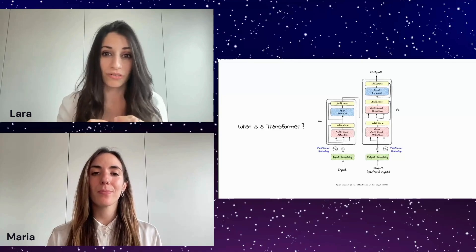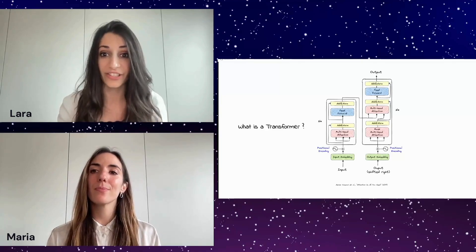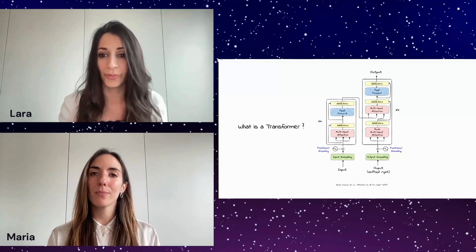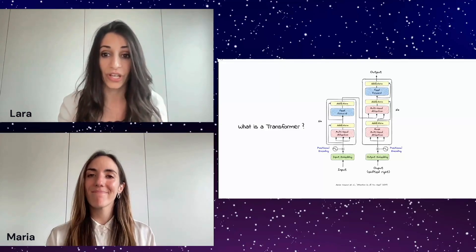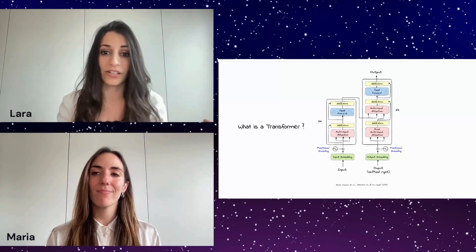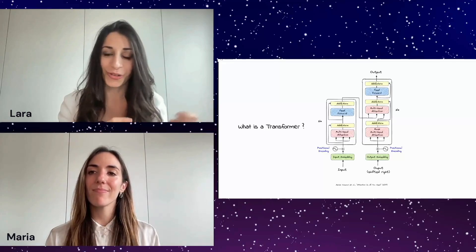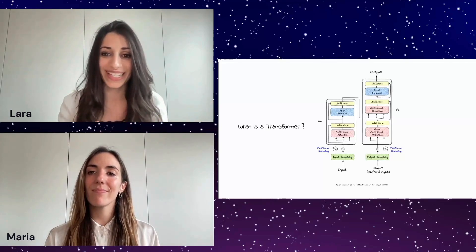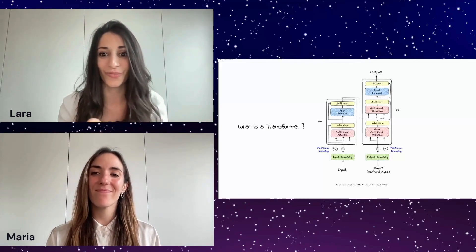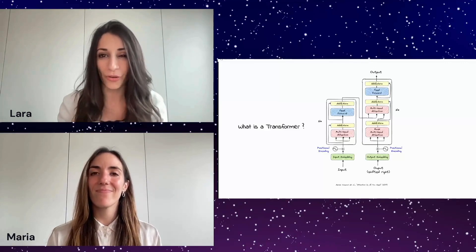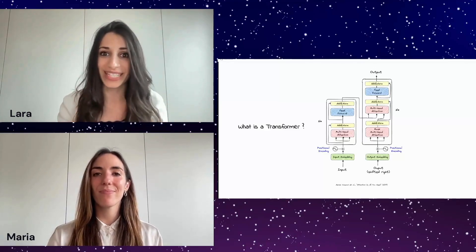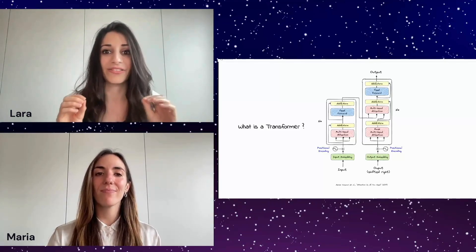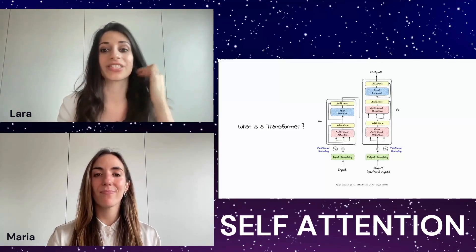It's called a transformer because it transforms data into meaningful output. Unlike other traditional models, transformers don't rely on fixed sequential processing. Instead, they consider all parts of the input simultaneously, and the key idea — the heart of it — is really self-attention.